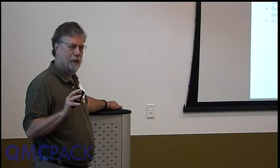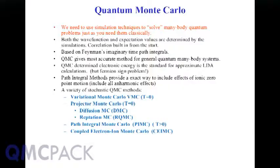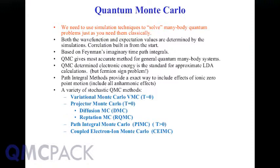If you believe that you need molecular dynamics to understand classical systems, then you have to believe the same thing about quantum mechanics. Feynman shows that you can map quantum mechanics into classical mechanics, so if you need molecular dynamics to understand a protein, you need something like Monte Carlo to treat electrons in an atom or molecule accurately. Quantum Monte Carlo is the most general method — you can do systems all the way from quarks, nuclei, electrons, liquid helium, to the quantum Hall effect, all within the same framework.